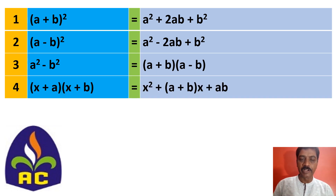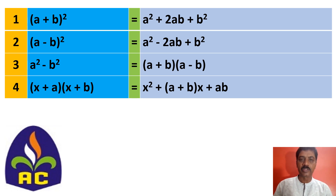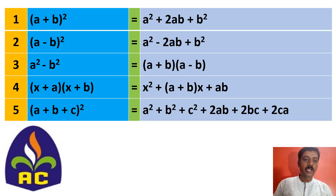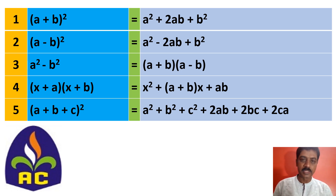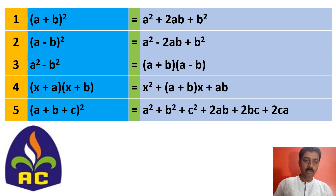The fourth identity is x plus a into x plus b, that is x squared plus a plus b into x plus ab. The fifth identity is a plus b plus c, the whole square, you write it as a squared plus b squared plus c squared plus 2ab plus 2bc plus 2ca.